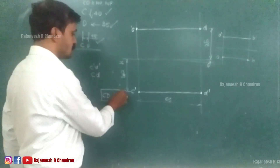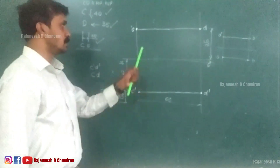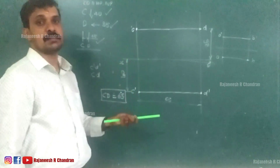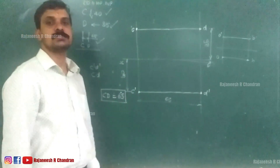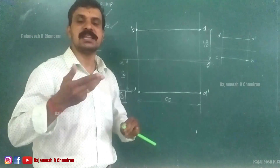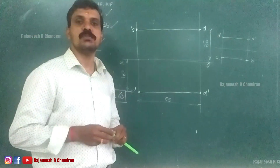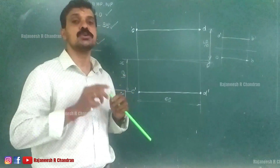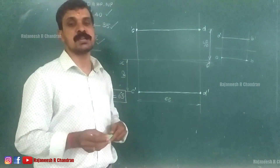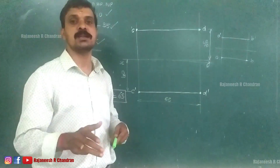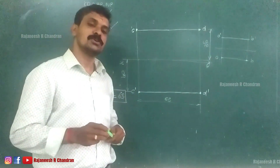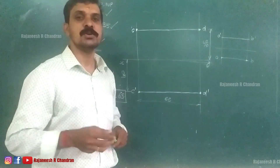I hope all of you have understood this question — the projections are CD and C-dash D-dash, and the dimensioning is also complete. In the next video we will be studying projection of lines perpendicular to one of the reference planes and parallel to the other. See you in the next video.